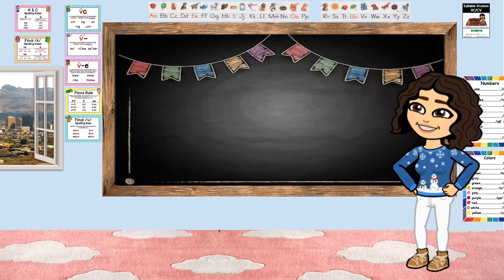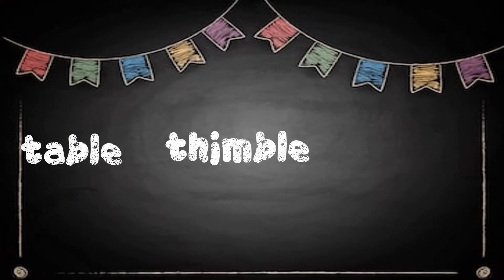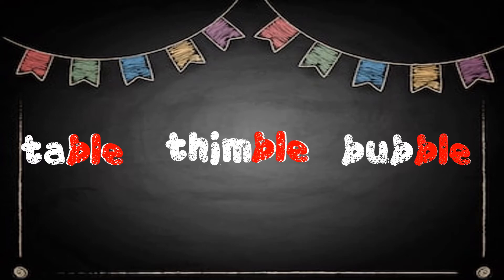This sound is different from those that we have been learning because it contains two sounds: B, L. Look at these words up on the board. Table, thimble, bubble. What do you see that might be making the 'bull' sound? B, L, E is making the 'bull' sound in each of these words. B, L, E makes the 'bull' sound.